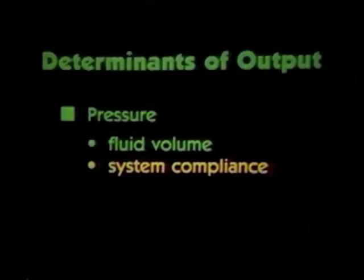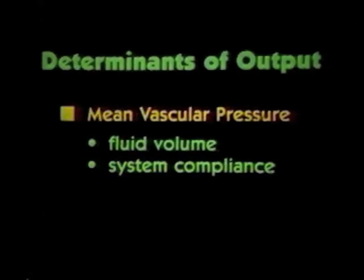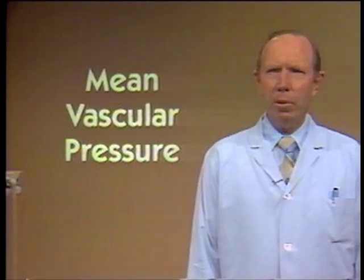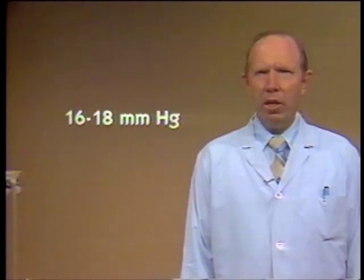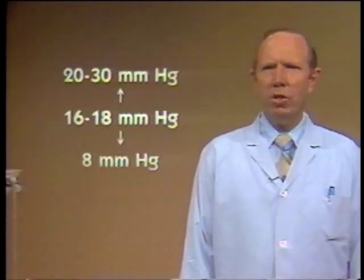So one determinant of output observed thus far is the pressure in the vascular system that forces fluid into the non-sucking heart, which has two components: the fluid in the system and compliance. This pressure — the result of blood volume and vascular compliance — is called mean vascular pressure, first described by Weber in 1863. Mean vascular pressure is the pressure in the vascular system with the heart stopped after pressures have equilibrated between the arteries, capillaries, and veins. It is normally between 16 and 18 millimeters of mercury above mid-heart level, measured up to 20 to 30 millimeters in high output states, and as low as 6 to 8 millimeters of mercury in shock states.